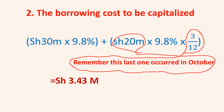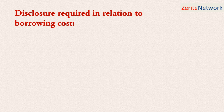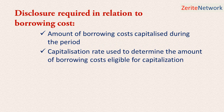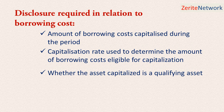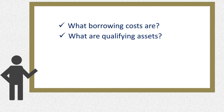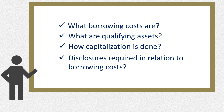Let's talk about disclosures required in relation to borrowing costs — there are three. Number one: the amount of borrowing costs capitalized during the period. Second: the capitalization rate used to determine the amount of borrowing costs eligible for capitalization. And last: whether the asset capitalized is a qualifying asset or not. In conclusion, I hope you can now explain what borrowing costs are, what qualifying assets are, how capitalization is done, and the disclosures required in relation to borrowing costs.